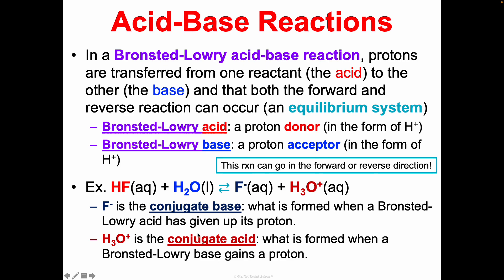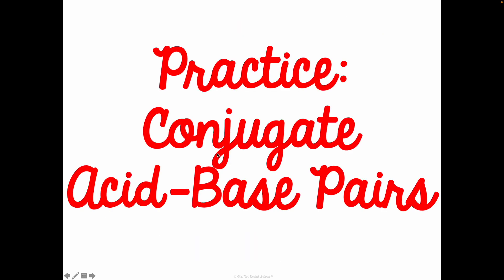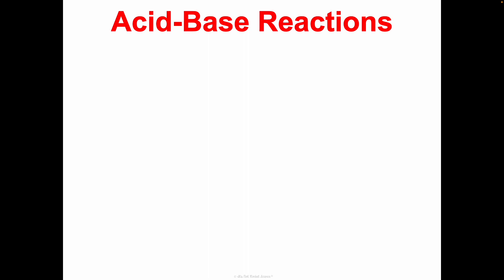Going in the reverse direction, H₃O⁺ would act as the acid and F⁻ would act as the base — that's why we give them these qualifying terms. This is one of those things that makes a lot more sense with practice, so we're going to practice with a conjugate acid-base pair practice page. Then we'll move on and talk about different combinations we see in acid-base reactions.